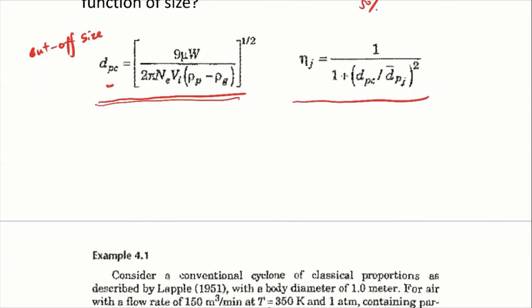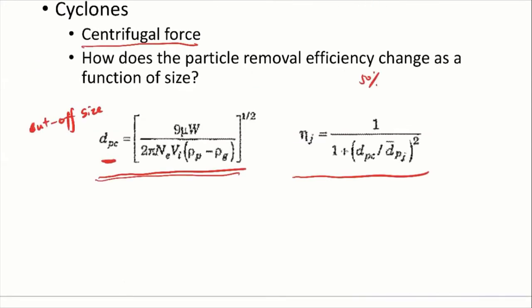The way we do that is: first we calculate DPC, the cutoff size, and then plug it into the equation. For particles with any size, we just plug in that size and calculate the collection efficiency. For example, if DPC is 5 microns and the particle has a size of 5 microns, then 5 divided by 5 is 1, and 1 divided by (1 plus 1) is 50%. That's why at the cutoff size the collection efficiency is 50%.